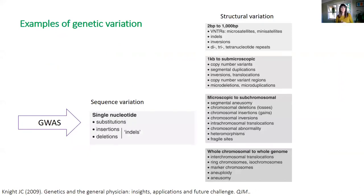The focus of GWAS is genetic variation that takes the form of SNPs or indels. However, this is not the only genetic variation that we will see in the genome. Other kinds of variation include, for example, large changes in the genome that can even extend to chromosomal differences.